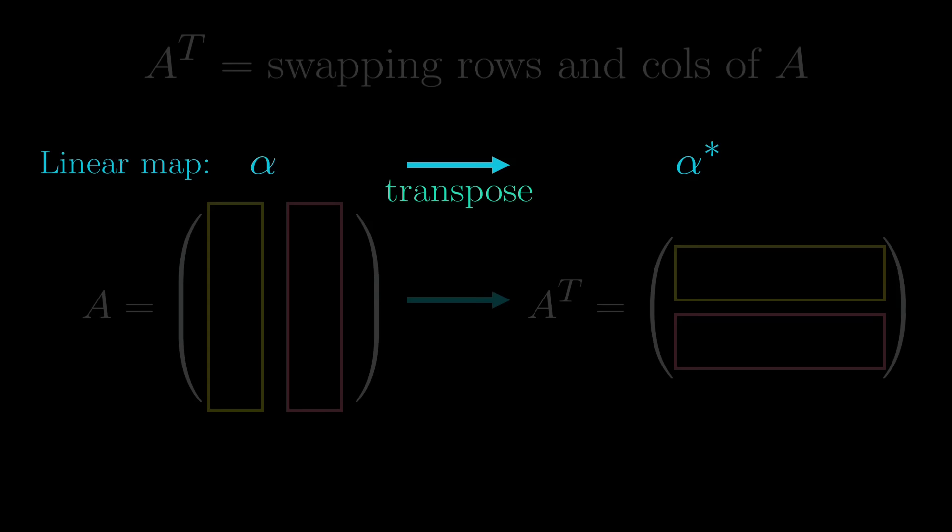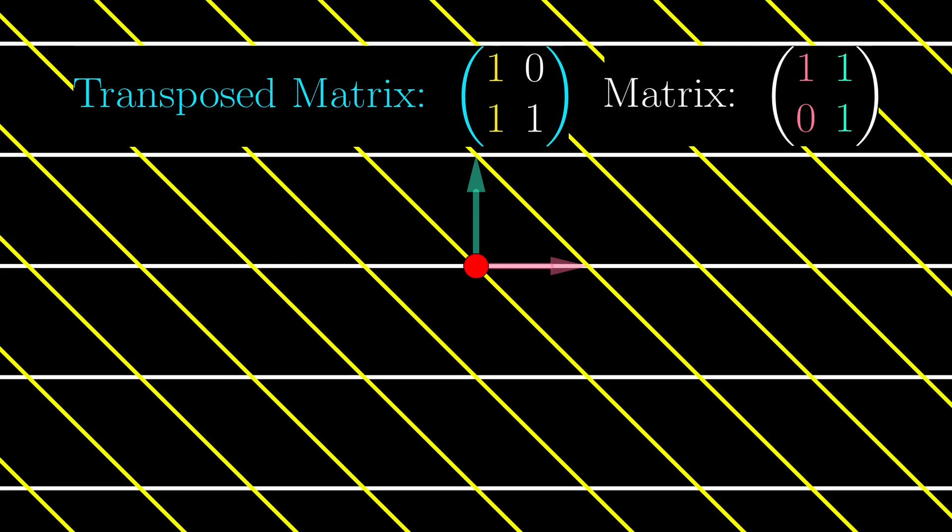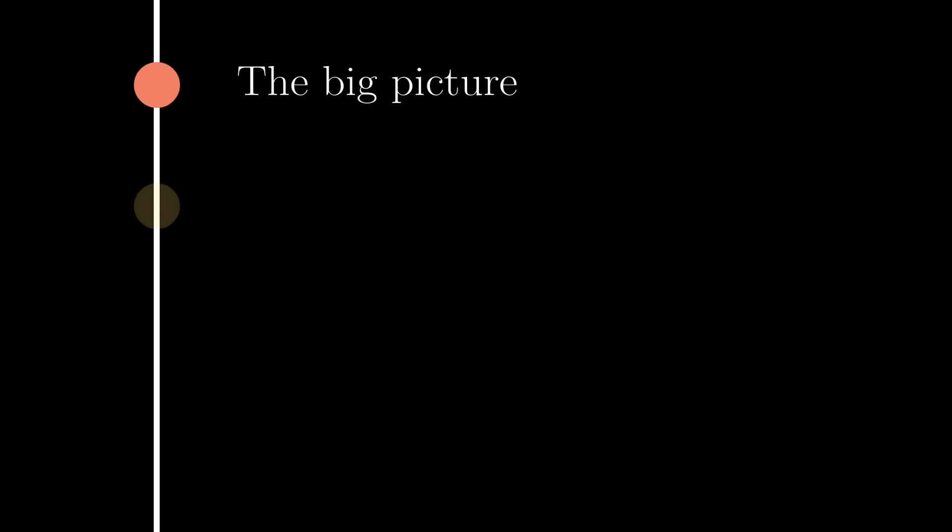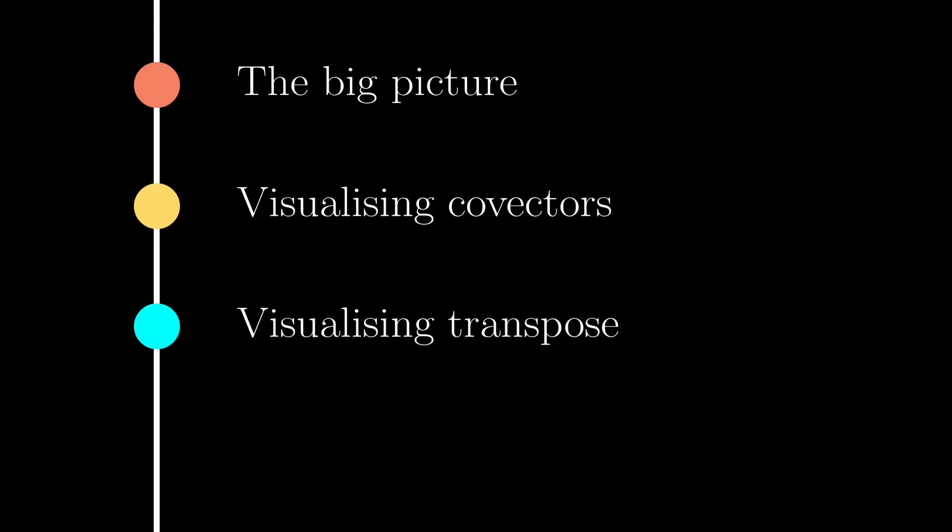A deeper understanding of how transpose came about will help us visualize it, and along the way we will come across deeper topics like covectors, duality, and so on. We will first go through a very general big picture of what transpose really is, then try to visualize something called covectors, then transpose with examples, and finally a very subtle but important point that links to special relativity.